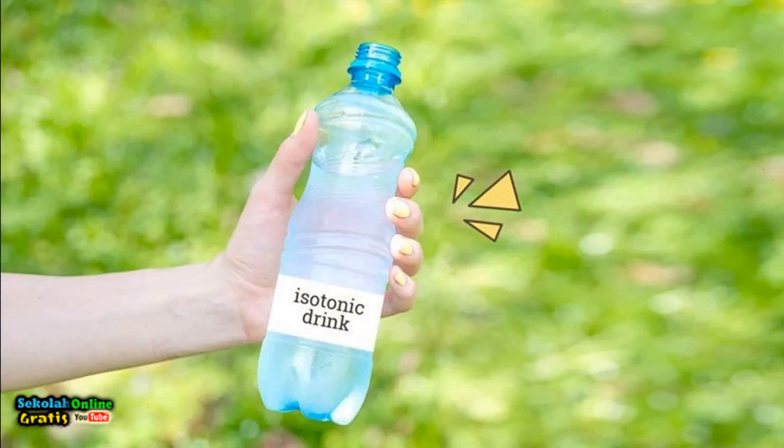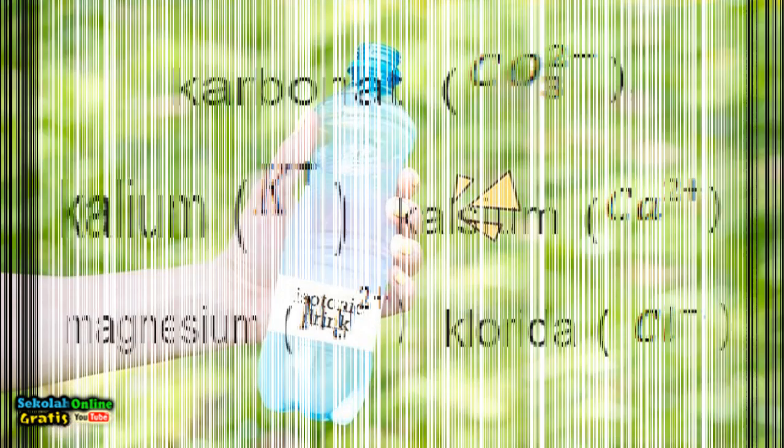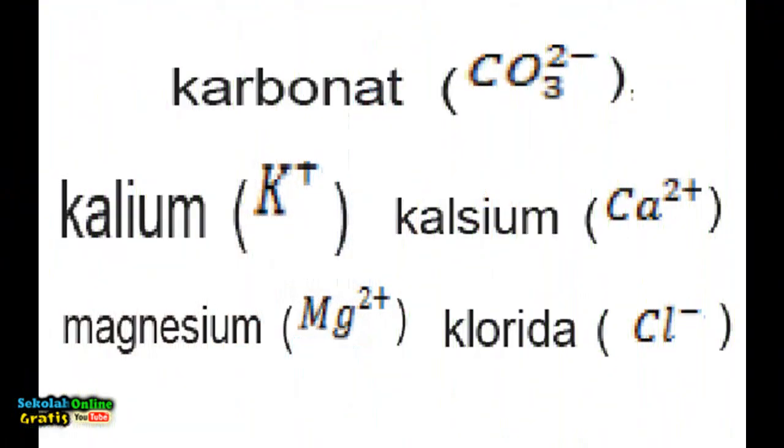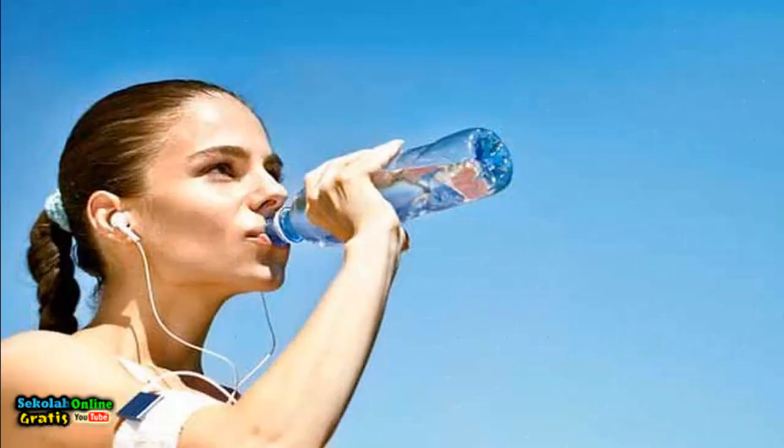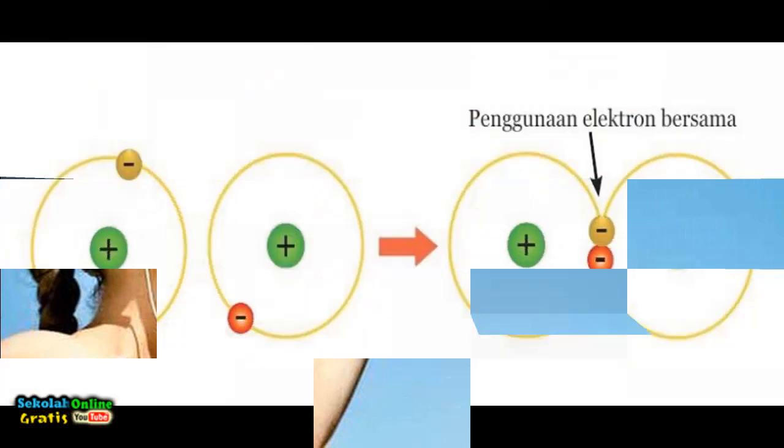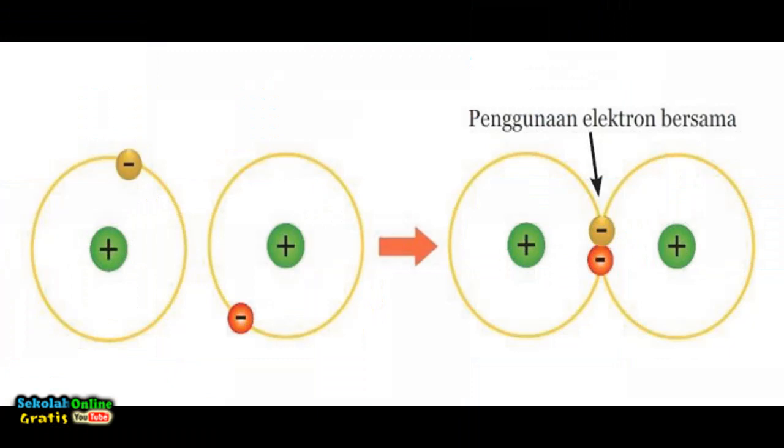Refreshment or isotonic drinks contain several types of ions such as potassium K+, calcium Ca2+, magnesium Mg2+, chloride Cl-, and atomic groups such as carbonate ions CO3 2-, and hydrogen carbonate ions HCO3-. These ions are already present in our bodies but due to strenuous activities these ions will be lost. So if the body loses ions it can drink isotonic drinks to replace the lost body ions.